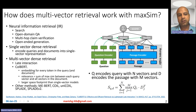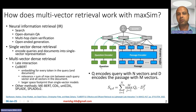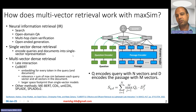The reason ColBERT is called multi-vector is as follows: you take the question, take each of those tokens, and come up with a representation for each token. Similarly, you take the passages or documents, take each of those tokens, and come up with a representation for each token. So rather than one vector for the query and one for the passage, you have one vector per token of the query and one per token of the document.